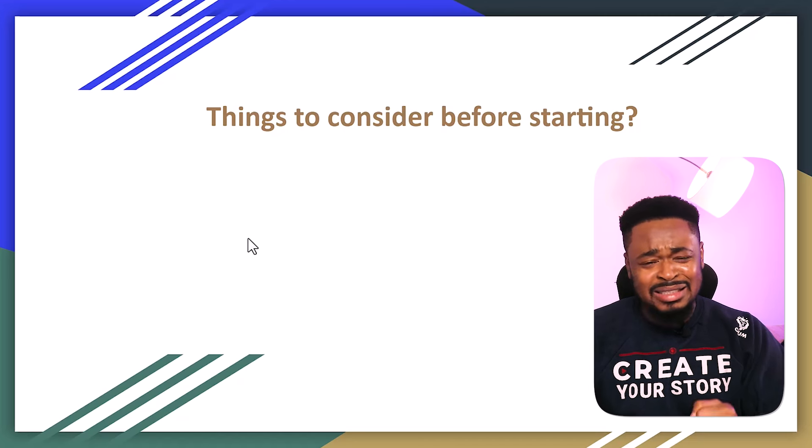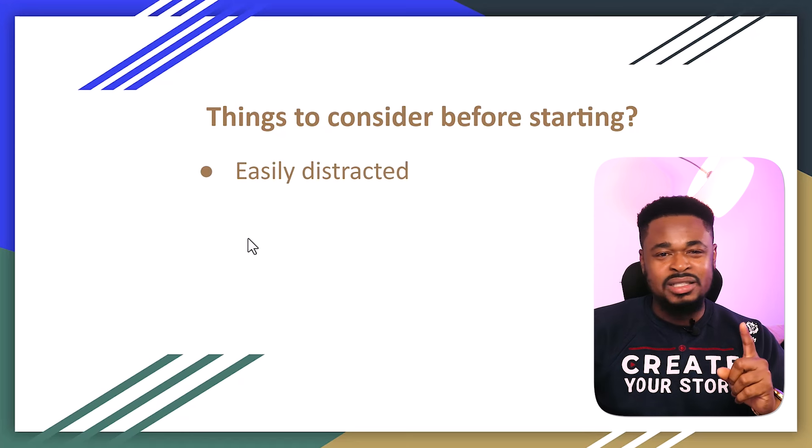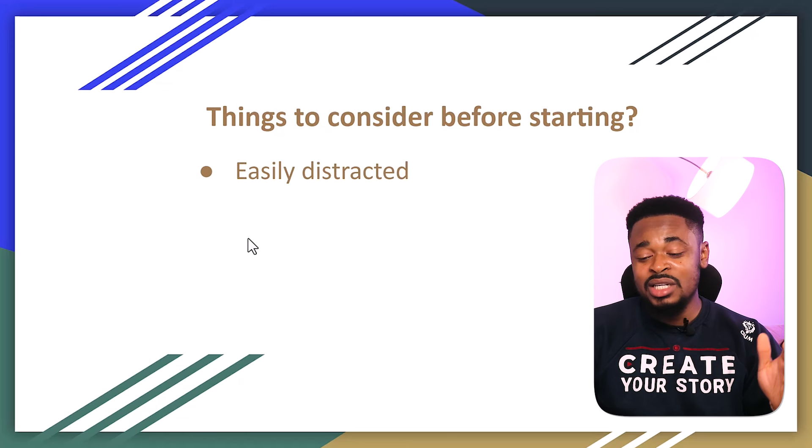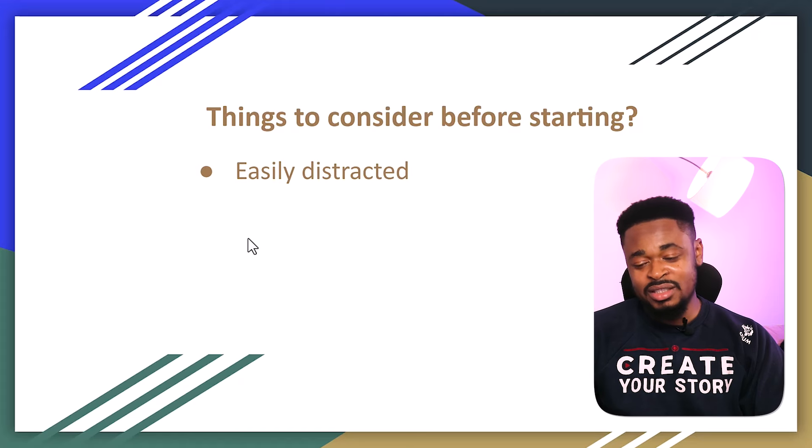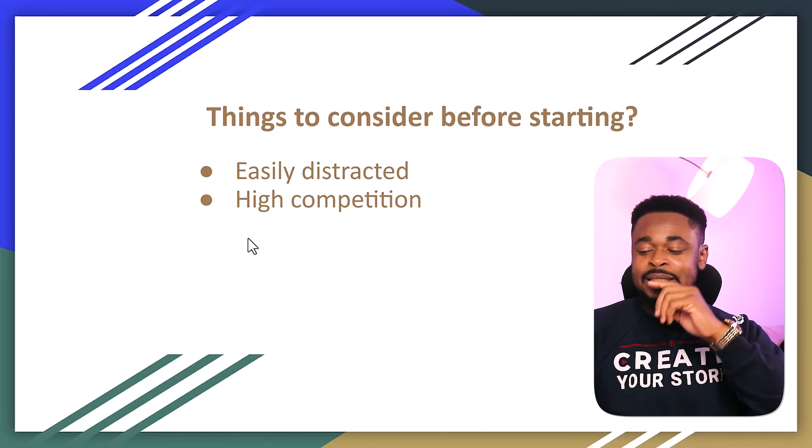Now there are things you need to consider before starting that a lot of people won't tell you. First, you can get easily distracted. Just like any other business — you're doing affiliate marketing and a friend says 'come try crypto' and before you know it you've jumped ship and started from scratch. You don't want to be distracted. If you've spent three to five months building affiliate marketing and you get distracted, you've lost it all. You need to stay focused.